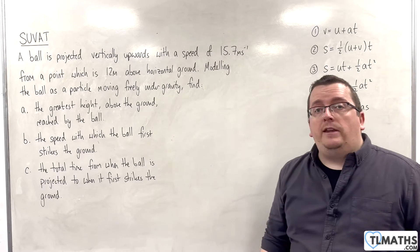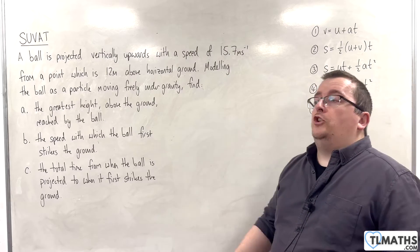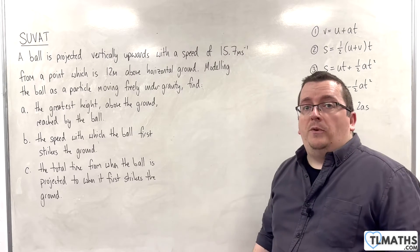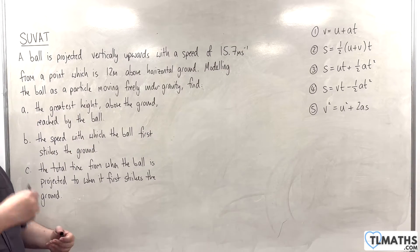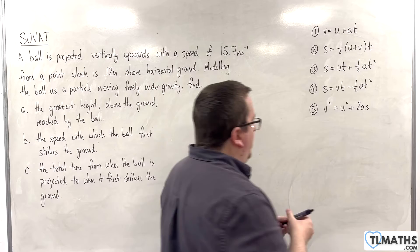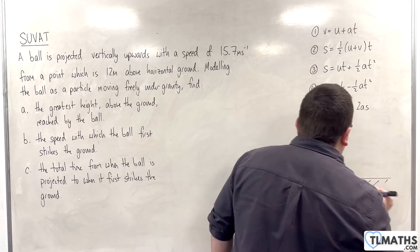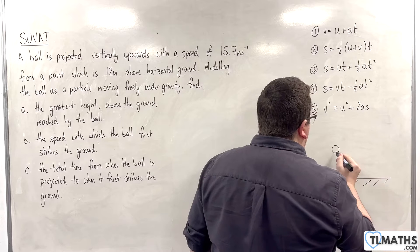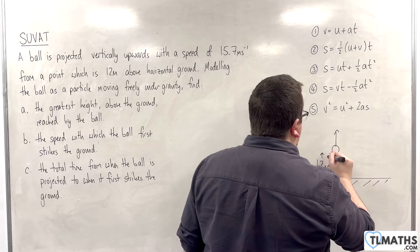Now, in this question, I'm going to use G is 9.8 metres per second per second, which for AQA means we've got to round our answers to two significant figures at the end. Let's draw a diagram so we can visualise what's going on. Here's the ground. Here is the ball.